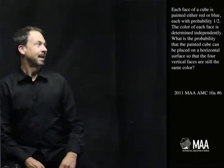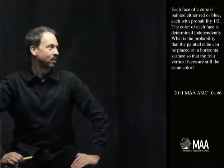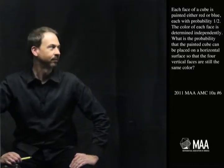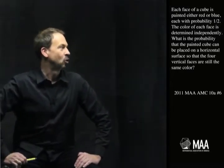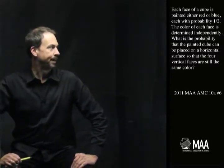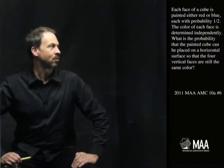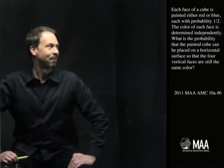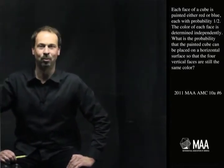It goes as follows. Each face of a cube is painted either red or blue, each with probability one-half. The color of each face is determined independently. It feels like a little technical piece of information there. What is the probability that the painted cube can be placed on a horizontal surface so that the four vertical faces are all the same color?